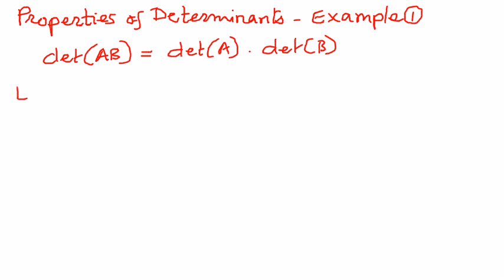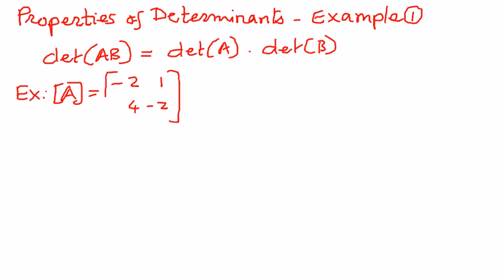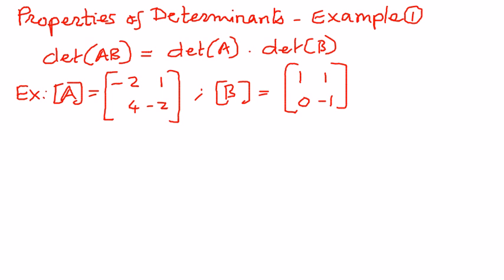In this example, let matrix A have elements: negative 2, 1, 4, and negative 2. We'll take a simple example like this. And then matrix B is going to be 1, 1, 0, negative 1. We will call this step number 1.